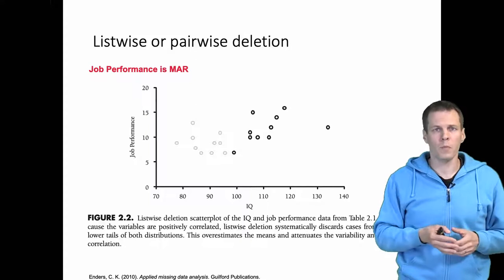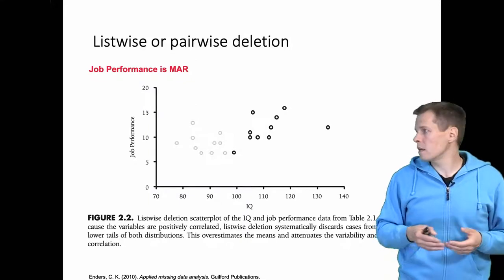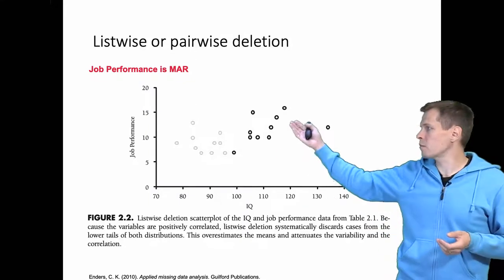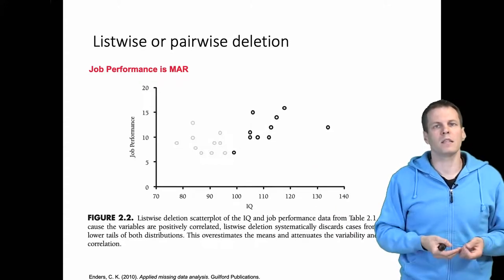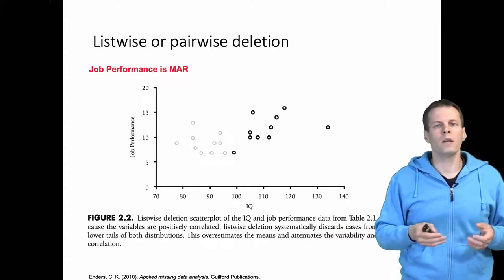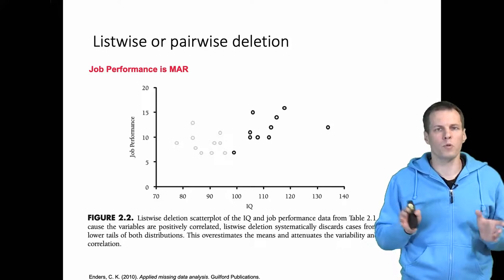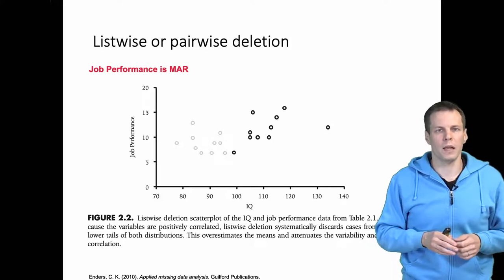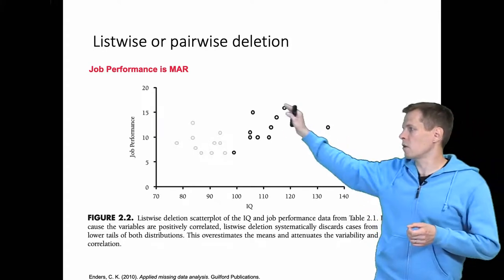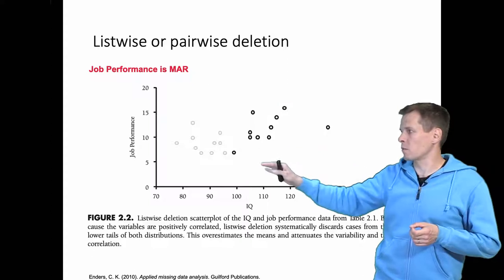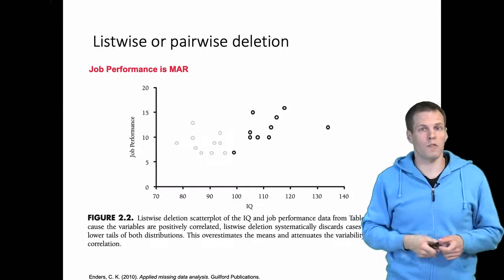The simplest possible thing we can do with these data is to apply list-wise or pair-wise deletion. That basically means dropping all observations with any missing data and simply estimating the regression coefficient with the remaining complete observations.